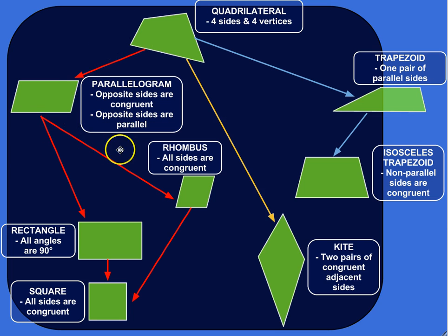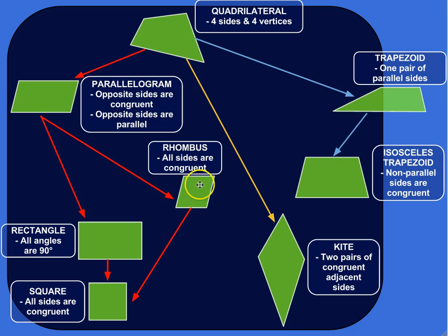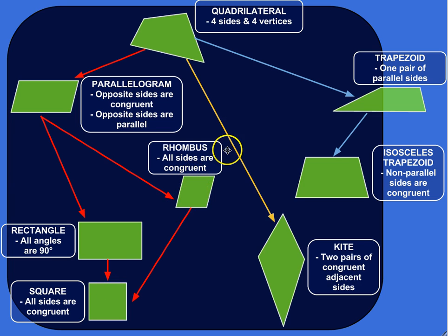Everything below the parallelogram will share these characteristics: opposite sides are congruent and opposite sides are parallel, but they'll also have some special characteristics. Following the parallelogram family — I've marked it all in red to make it easier to keep track of — a special kind of parallelogram is a rhombus, where all the sides are congruent. It's basically like a square, except flopped to the side. Opposite sides are still parallel, and all the sides are congruent — they're all the same length. A special type of rhombus is a square: all the sides are congruent, and now all the angles are 90 degrees.